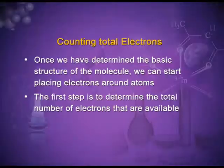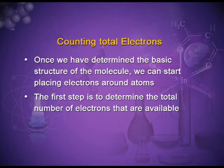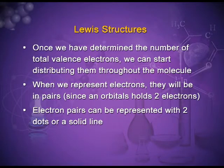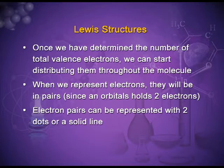Let me revise the counting of total electrons. Once the basic structure is determined, we start placing electrons around atoms. The first step is to determine the total number of available electrons using the group number of the element — for example, oxygen in Group 6A contributes six electrons. Electrons are represented in pairs since an orbital holds two electrons; electron pairs can be shown with two dots or a solid line.